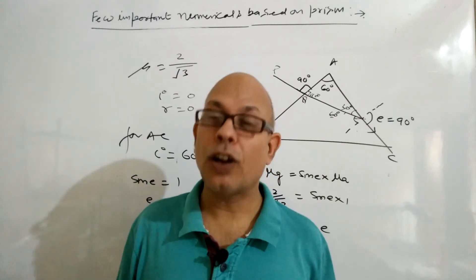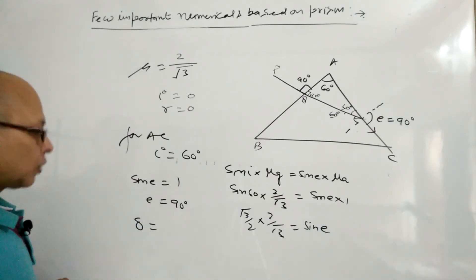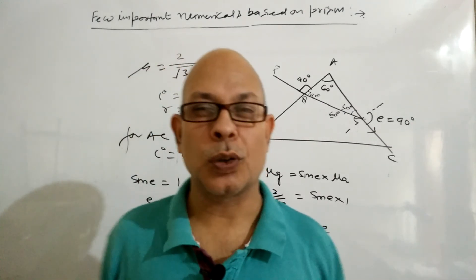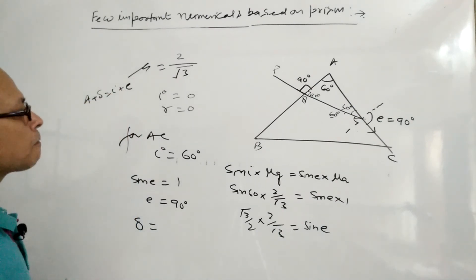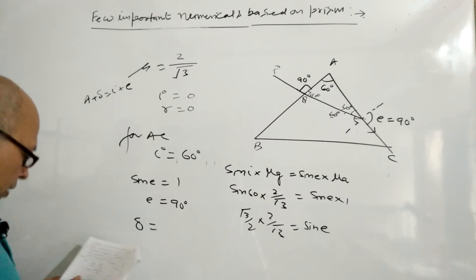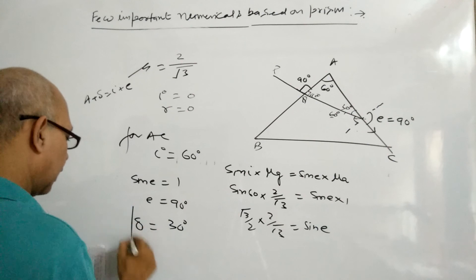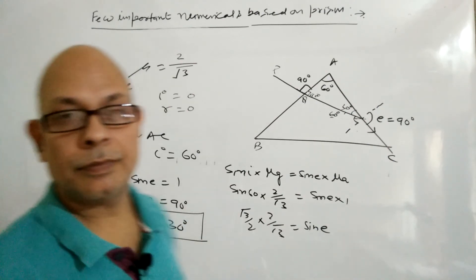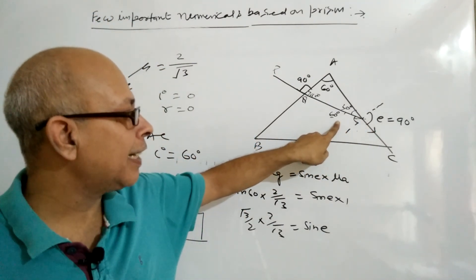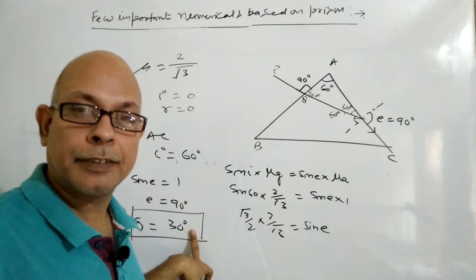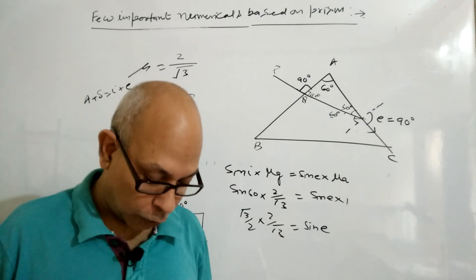The angle of deviation δ is given by δ = (I + E) − A. Here I = 0°, E = 90°, and A = 60°, so δ = (0 + 90) − 60 = 30°. The angle of deviation is 30°.